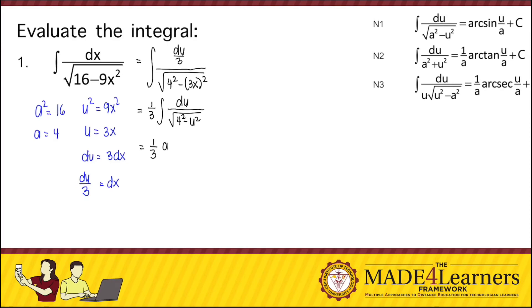So that's 1 third arc sine of u over a, which is 4, plus c. But u is equal to 3x, so we write 1 third arc sine of 3x over 4 plus c.